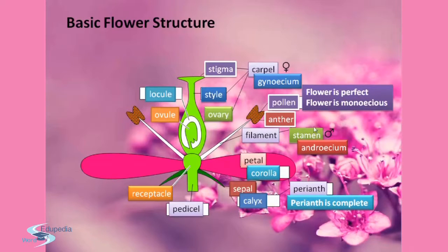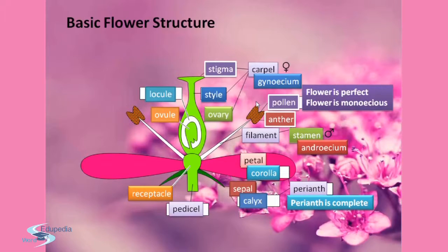The stamen is the pollen-producing part of the flower, usually with a slender filament supporting the anther. This is the bilobed anther — the stamen supports the anther. The anther is the part of the stamen where pollen is produced. The pistil is the ovule-producing part of a flower; the ovary often supports a long style topped by the stigma. The mature ovary becomes a fruit and the mature ovule becomes a seed.